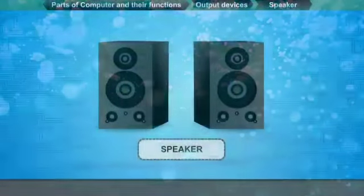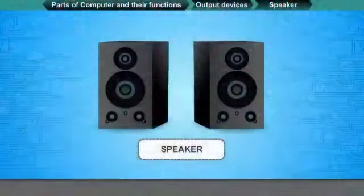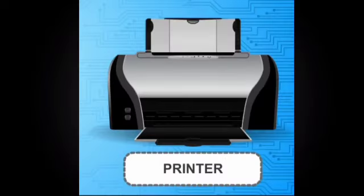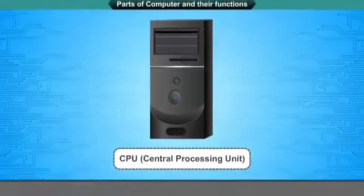Speaker: It produces sound and is an output device. We can listen to music on it. Printer: A printer is also an output device. It produces a printed form of the result.